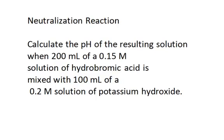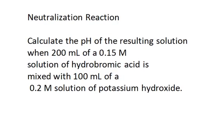The first thing you need to do is recognize what's going on. You have a chemical reaction between two substances, and you need to define what those substances are. Hydrobromic acid is a strong acid. Potassium hydroxide is a strong base. So you need to first write down the balanced chemical equation. Hydrobromic acid, HBr.